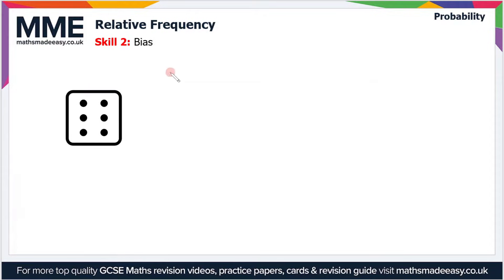So again if we use the same example, let's say we want to roll a six, the theoretical probability is one-sixth. And that's just because there are six sides on a dice, and one of them is six.